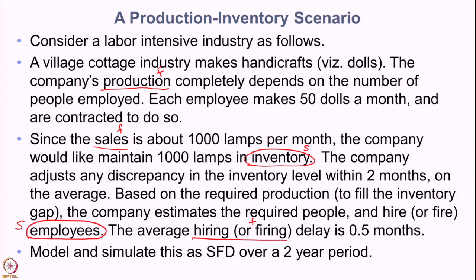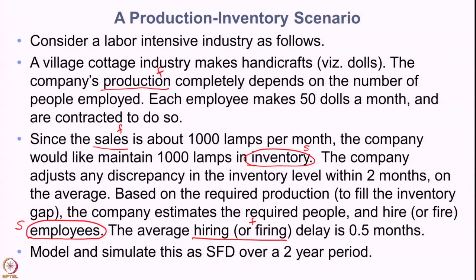To increase or decrease inventory level: sales is external to the company at about 1000 dolls per month, so the only way to adjust inventory is by changing production. Production can only be changed by the number of employees — hire more people to produce more, or keep fewer people to produce less. Based on the inventory discrepancy, we can compute the required production rate, estimate required people, and that results in hiring or firing, affecting the employee stock.